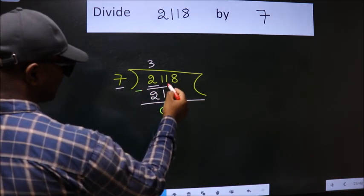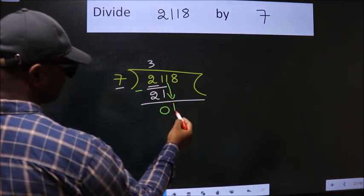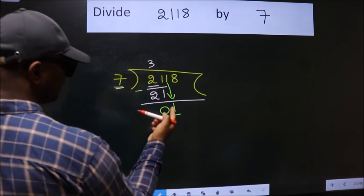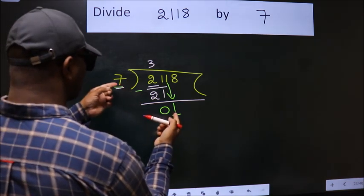After this, bring down the beside number. So 1 down. Here we have 1, here 7. 1 is smaller than 7.